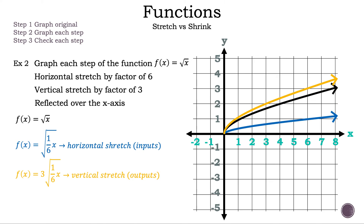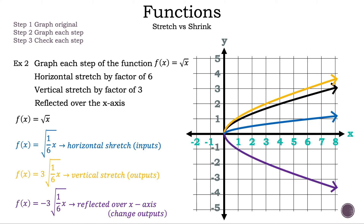Now let's move on to the next step: f(x) = −3√(1/6 · x). Is the graph going to reflect downward or to the left? Remember, the negative outside the square root affects the output, so the graph is going to reflect downward or across the x-axis. Let's check the points (6, 3) and (6, −3). Looking at the outputs, one is positive and one is negative, and if we take the absolute value of both outputs the result is 3, which is what happens when you reflect across the x-axis. That is example 2.